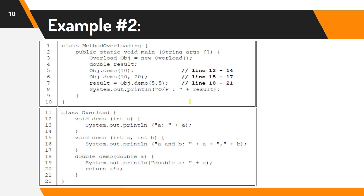We have here another example of method overloading. As you will notice in class Overload, it has similar method names — demo — but different parameters and different return types: void, void, void, and one is double. In terms of parameters, the first one has only one integer value, the second one has two integer values, and the third one has a double value.